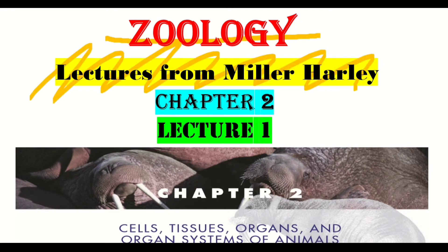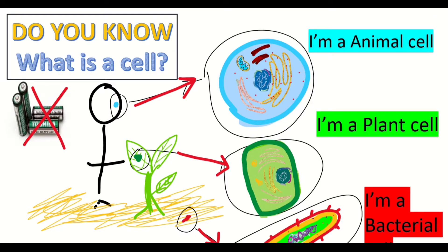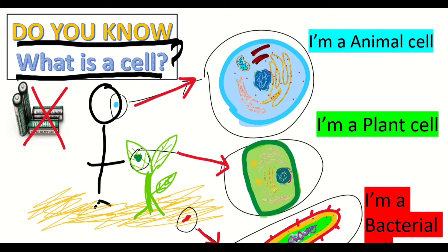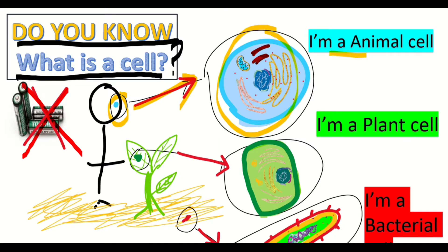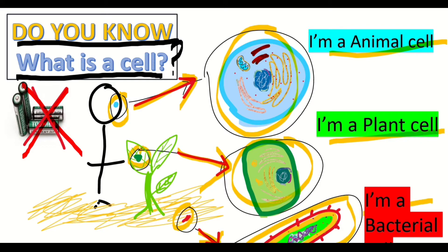Zoology Lectures from Milahale, Chapter 2, Lecture 1. Chapter 2 is named Cells, Tissues, Organs and Organ Systems of Animals. We are looking at the animal cell, plant cell and bacterial cell. As in the image you can see an animal cell, a plant cell in a plant leaf, and bacteria in soil — that is a bacterial cell.